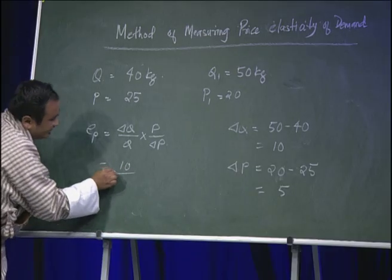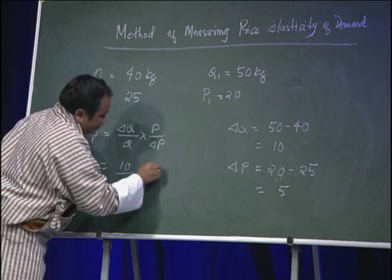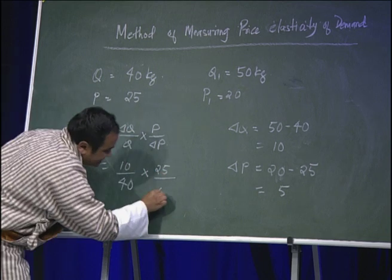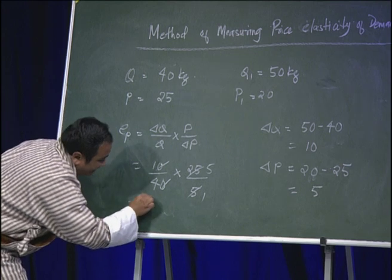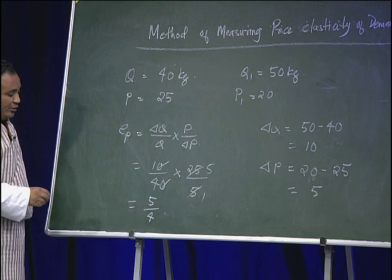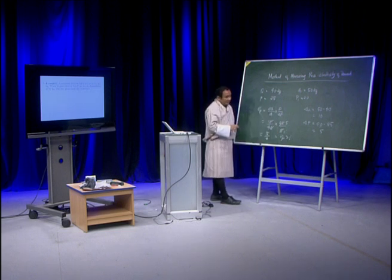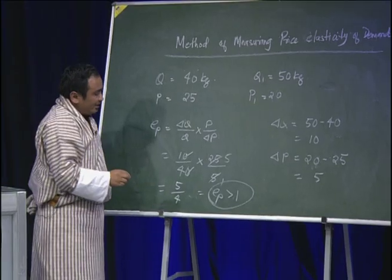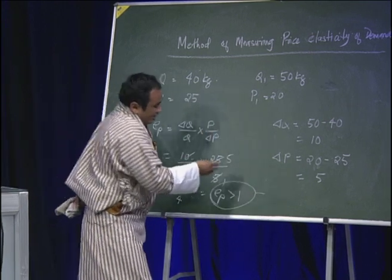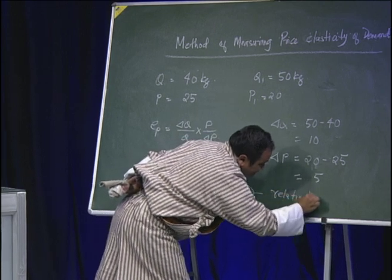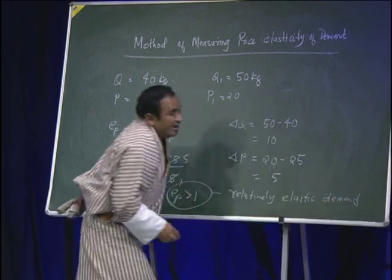Replacing the values: change in quantity 10, divided by initial quantity 40, multiplied by initial price 25, divided by change in price 5. This gives 5 divided by 4, which is greater than 1. We can conclude that in the above question, it is relatively elastic demand.